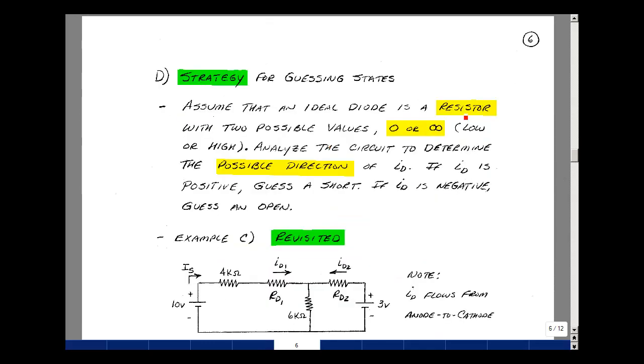Let's assume that the diode is a resistor. Now we saw from the plot on page one that it had a slope such that it was zero ohms or infinity. Now zero and infinity are extreme numbers. Let's just think of a low value and a high value, maybe 1 ohm and maybe 100 million ohms. Then we're going to analyze the circuit and try to figure out the possible direction of the current in the diode. If the current is flowing from anode to cathode, then we'll assume it's a short. If the current is flowing from cathode to anode, we'll assume it's an open.